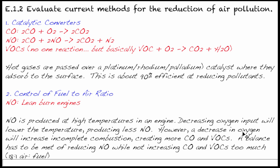However, a decrease in oxygen causes another problem, incomplete combustion. When you do that, you will actually create more of the other pollutants, CO and VOCs. So what the designers have to do is find a balance of reducing NO while not increasing CO and VOCs too much. They've found that there's basically an 18 to 1 air to fuel ratio. So we're still producing all three of these, we're just trying to reduce the amount of nitrogen monoxide going out.